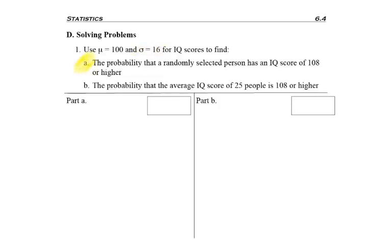Question A asks to find the probability, so I know I'm going to be using the table, and my answer is going to be in the middle of the table, that a randomly selected person has an IQ score of 108 or higher. So first thing is I like to draw the picture.